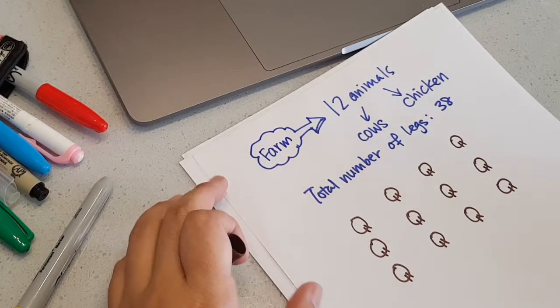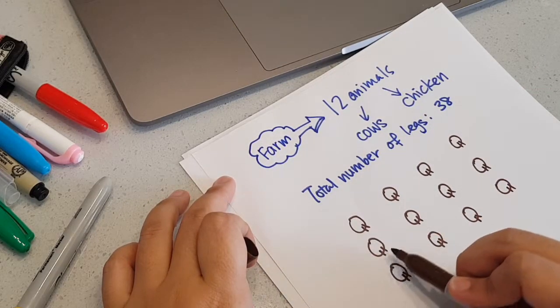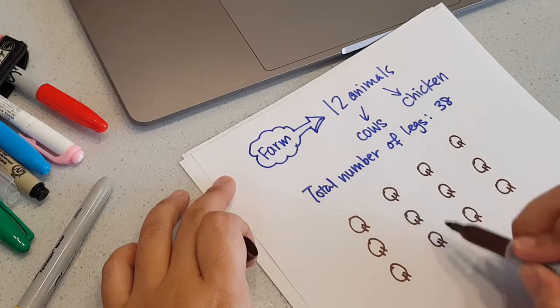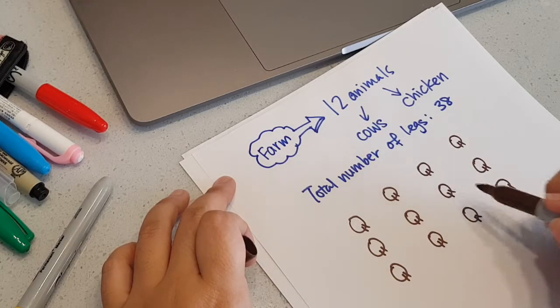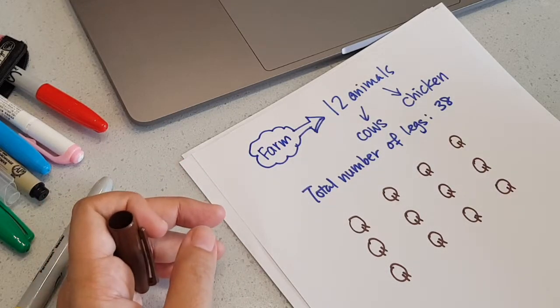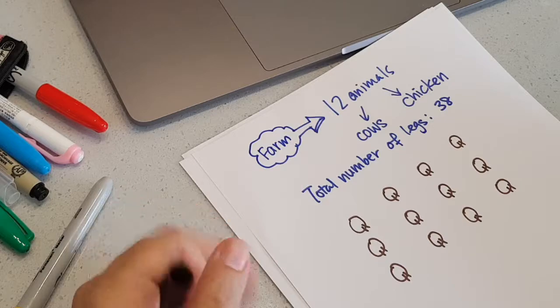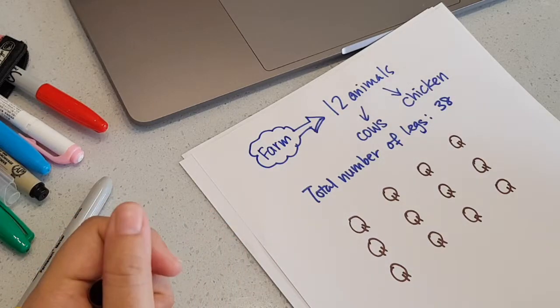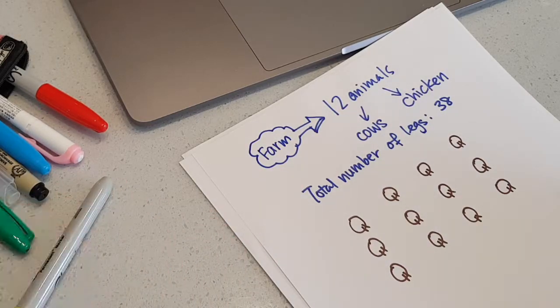So now how many legs do I have? 1, 2, 3, 4, 5, 6, 7, 8, 9, 10, 11, 12, 13, 14, 15, 16, 17, 18, 19, 20, 21, 22, 23, 24. 24 legs. I need 14 more. One way is you can count up. You can either take 14 more divide by two, which is seven more animals with two more legs, or you can just simply count up.